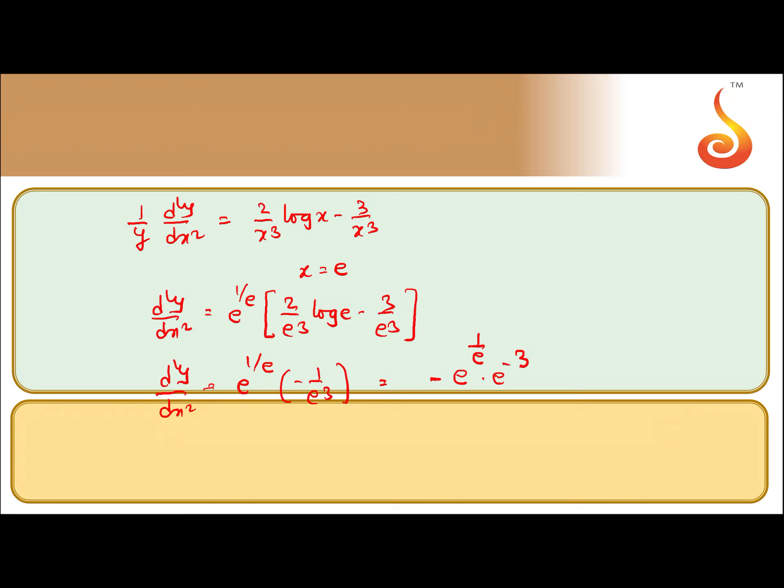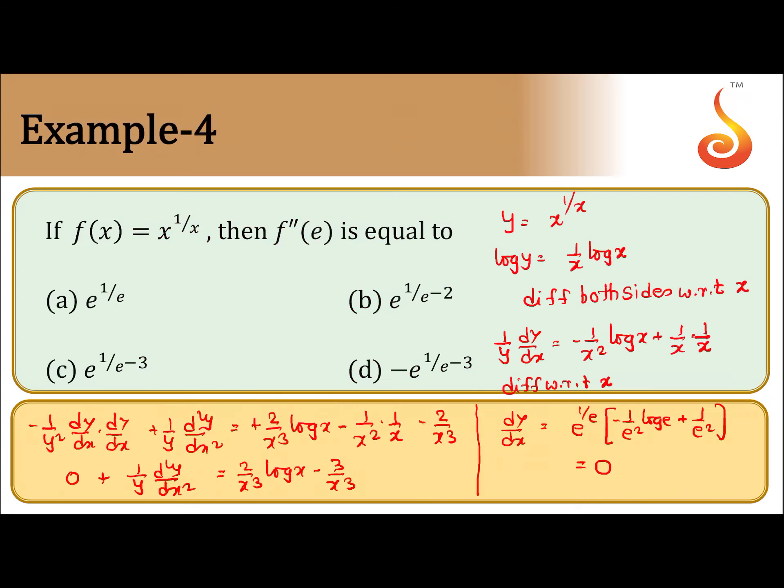To repeat: y is equal to x to the power 1 by x, log y is equal to 1 by x log x. Differentiating both sides with respect to x, 1 by y dy by dx equals the derivative of 1 by x, which is minus 1 by x square log x, and derivative of log x is 1 by x, so we get minus 1 by x square log x plus 1 by x square. Differentiating again with respect to x, the derivative of 1 by y is minus 1 by y square dy by dx into dy by dx, plus 1 by y d²y by dx².